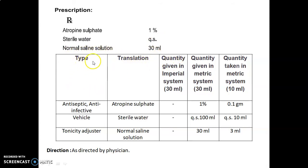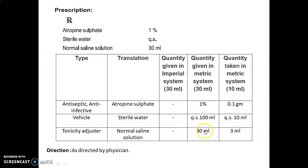The formulation table includes: name of ingredient, quantity given in the imperial system for preparing 30 ml, quantity given in the metric system for preparing 30 ml, and quantity taken in the metric system for actual preparation of 10 ml. Atropine sulfate, used as an antiseptic and anti-infective, quantity given is 1%, meaning 1 gram per 100 ml; multiplied by factor 0.1, we get 0.1 gram. Sterile water, used as a vehicle, quantity sufficient up to 100 ml; for preparing 10 ml, quantity sufficient up to 10 ml. Normal saline solution, used as a tonicity adjuster, quantity given 30 ml; multiplied by the factor, quantity taken is 3 ml. Direction: as directed by physician.